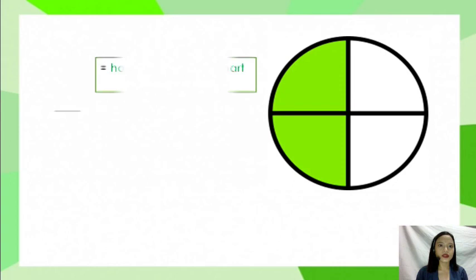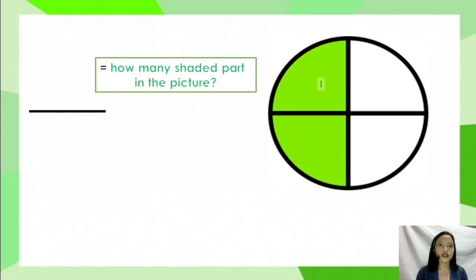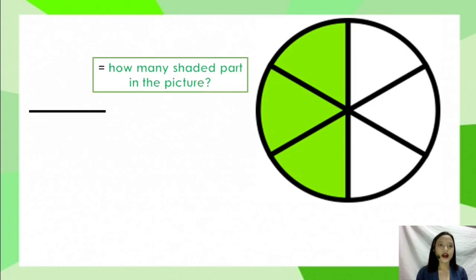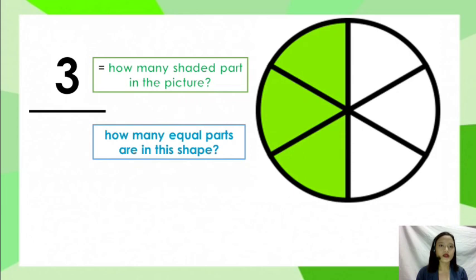Let's have another one. How many shaded parts in the picture? Let's count. One, two. So the numerator is two. We read it as two fourths.